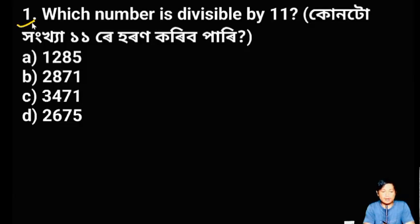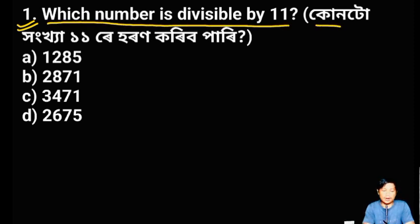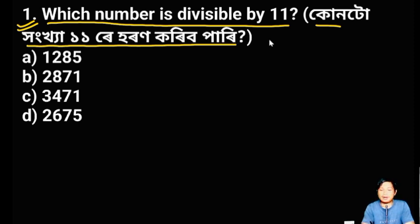Our first question is important. Which number is divisible by 11? If there are important ones to look at 11, but if there are 150 of them, what is the value? Each number is divisible by 11.